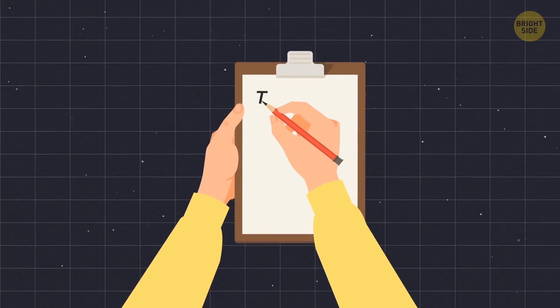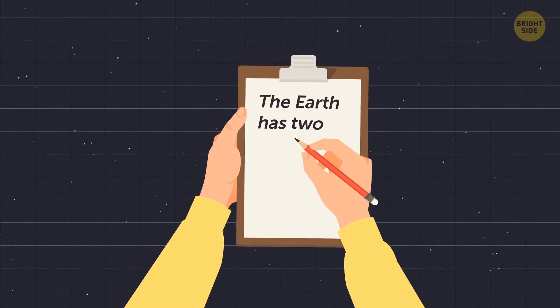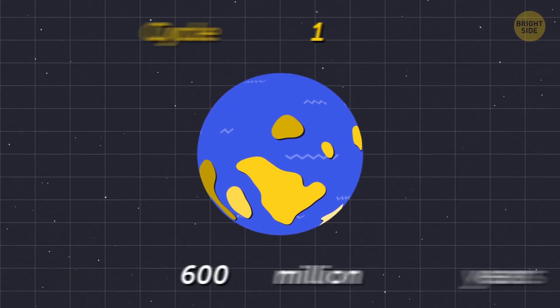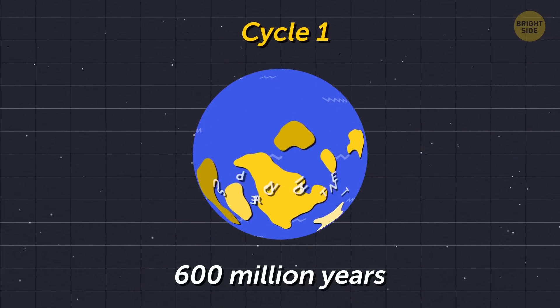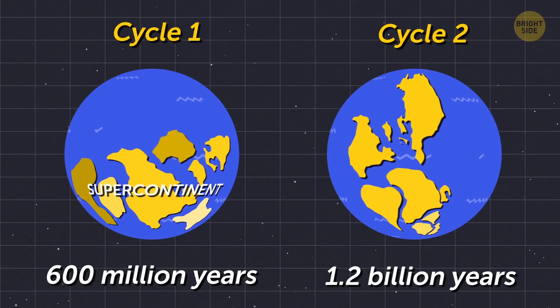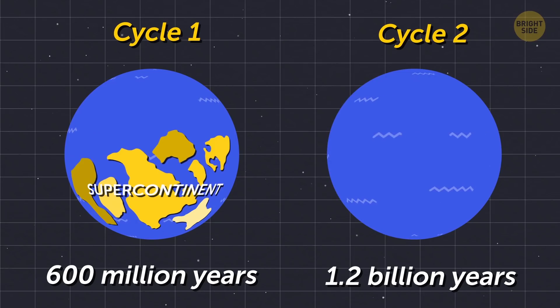According to one of the papers, Li and his team believe that the Earth has two alternating cycles. The first one runs for 600 million years, and it brings all the landmasses together. The second cycle lasts for double the time, around 1.2 billion years, and a new superocean is born.